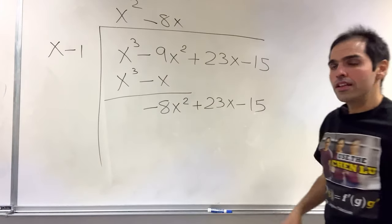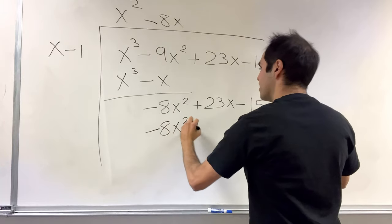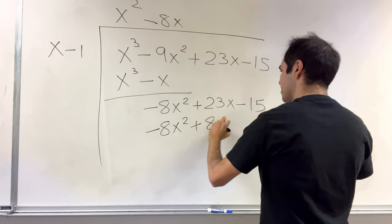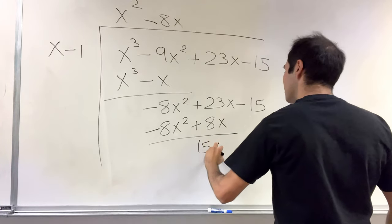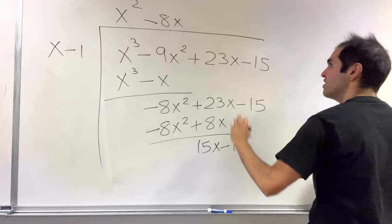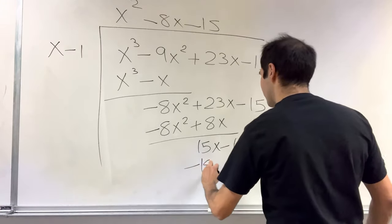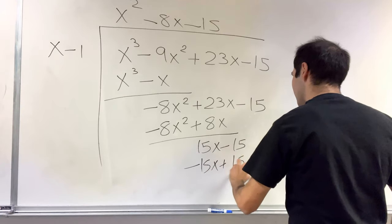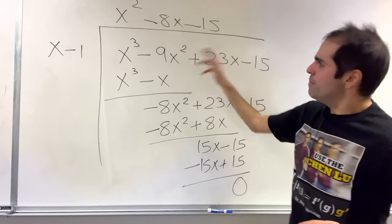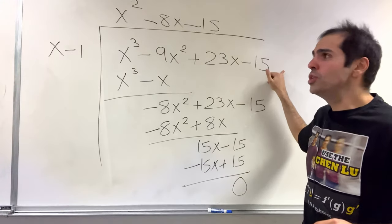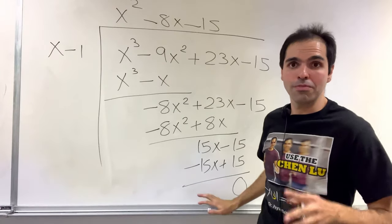And now multiply it by minus 8x, and what you get is minus 8x squared plus 8x. And 23 minus 8 is 15, so 15x minus 15. And then we do minus 15 to get minus 15x plus 15. And then ding ding ding, you end up getting 0, meaning that this x cubed thing is x minus 1 times x squared minus 8x plus 15.